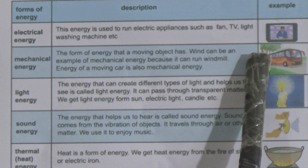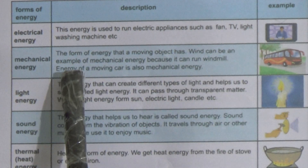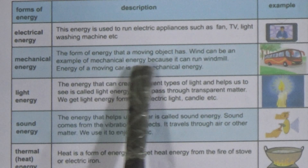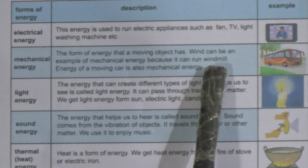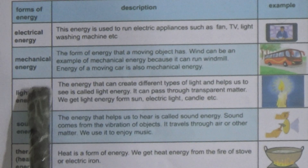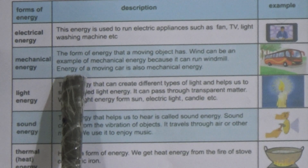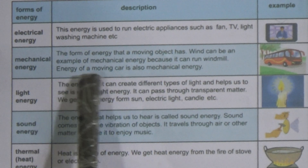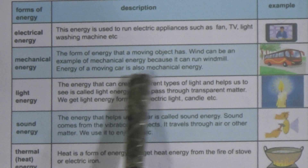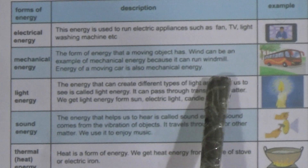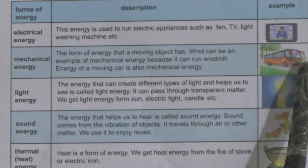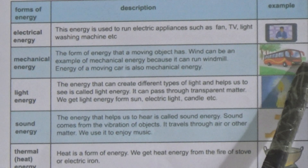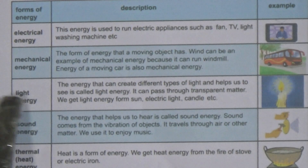Now come to mechanical energy — the form of energy that a moving object has. Wind can be an example of mechanical energy because it can run a windmill. The energy of a moving car is also mechanical energy. The example given is the figure of a running vehicle.